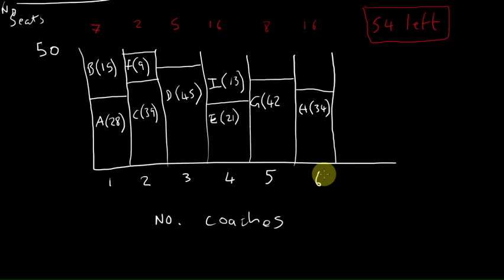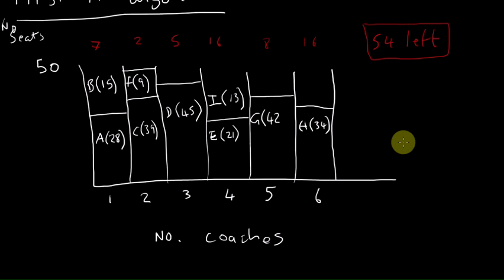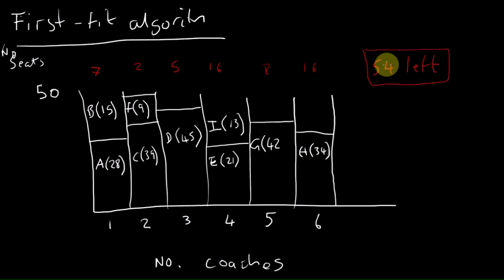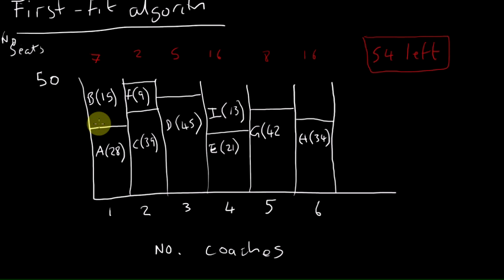And we know that there was 50 seats per coach. So although in using this algorithm we can see that we've needed another coach, there may well be a better sorting, a better system, better algorithm to use where we can reduce to just using five coaches. And obviously using five coaches means that you don't have to pay more money for a sixth coach, so you're kind of saving money there. So we're going to carry on this question but use a first-fit decreasing algorithm, so see you in the next video for that.